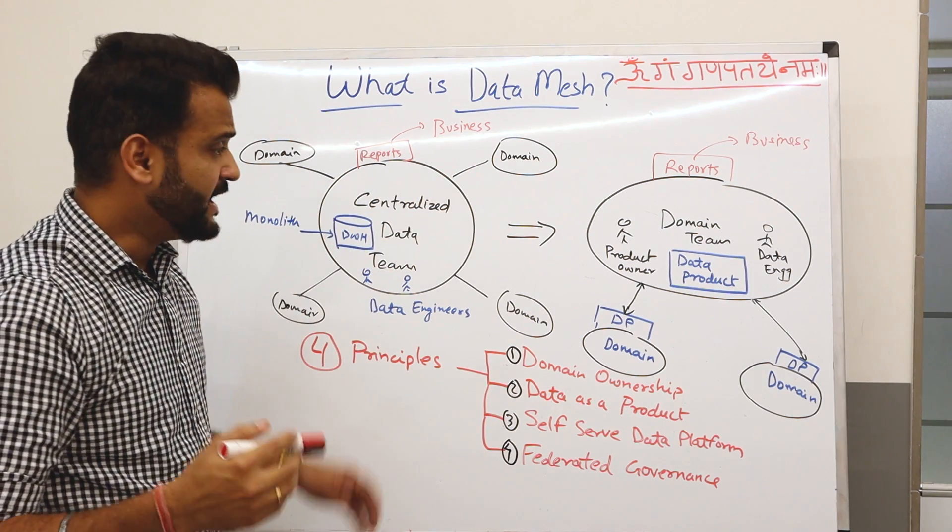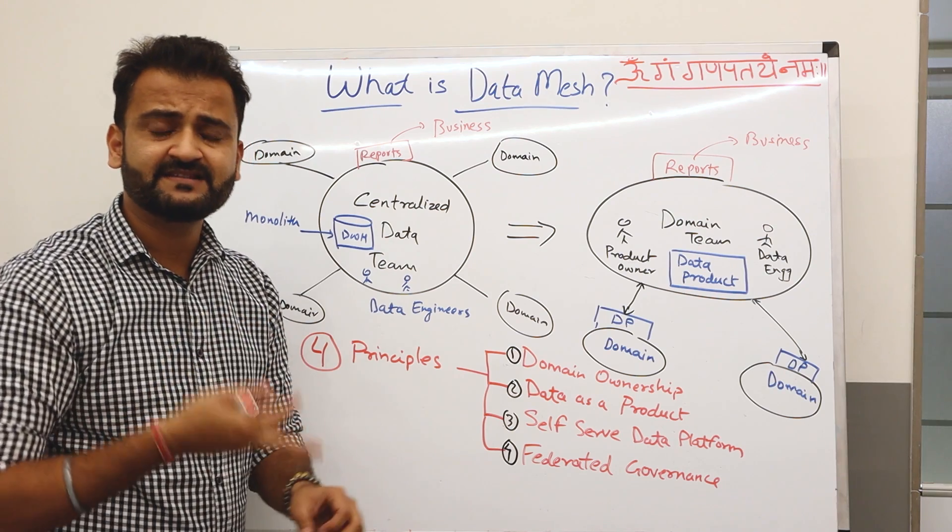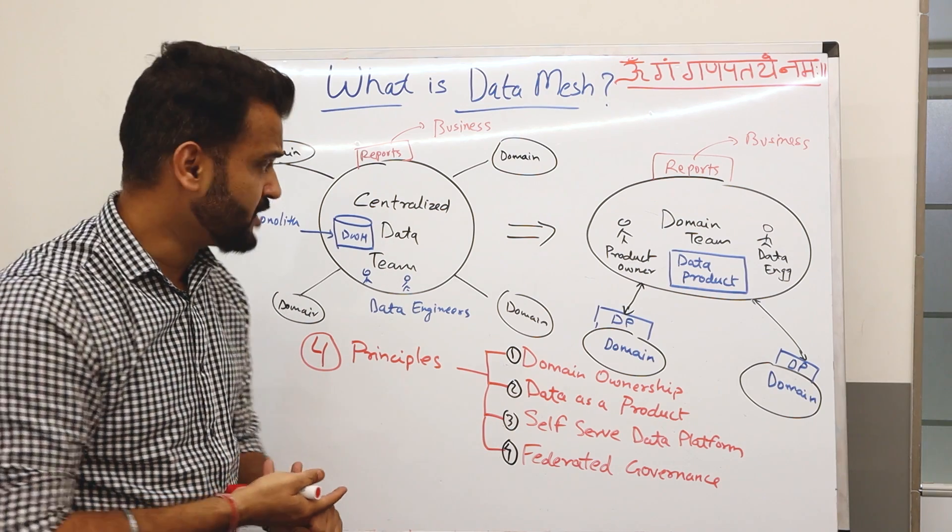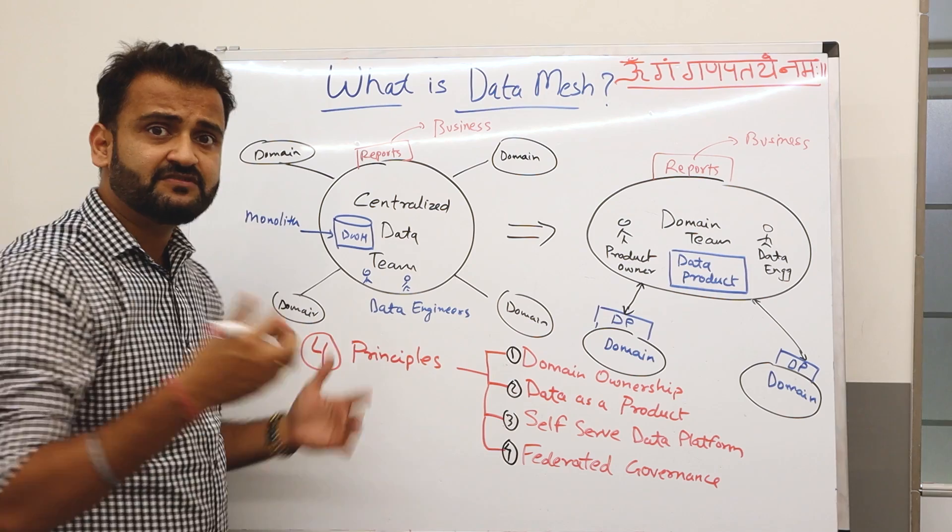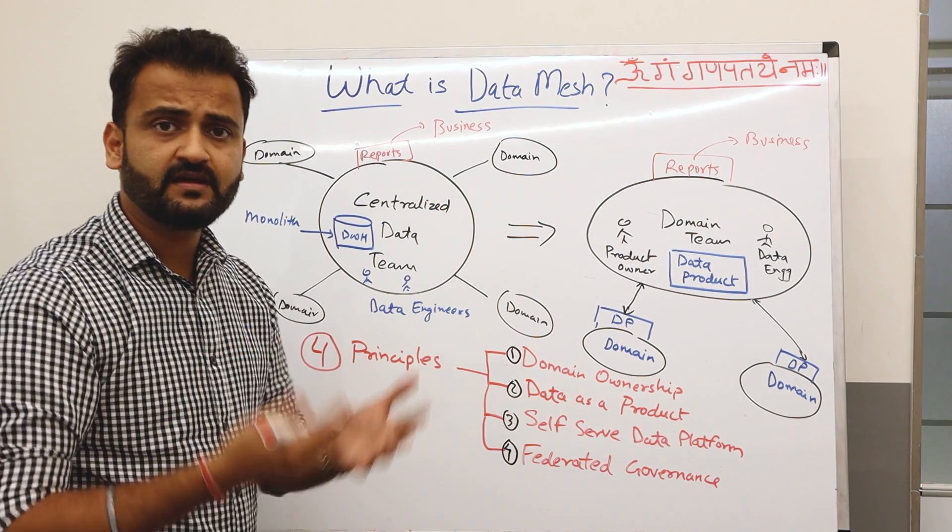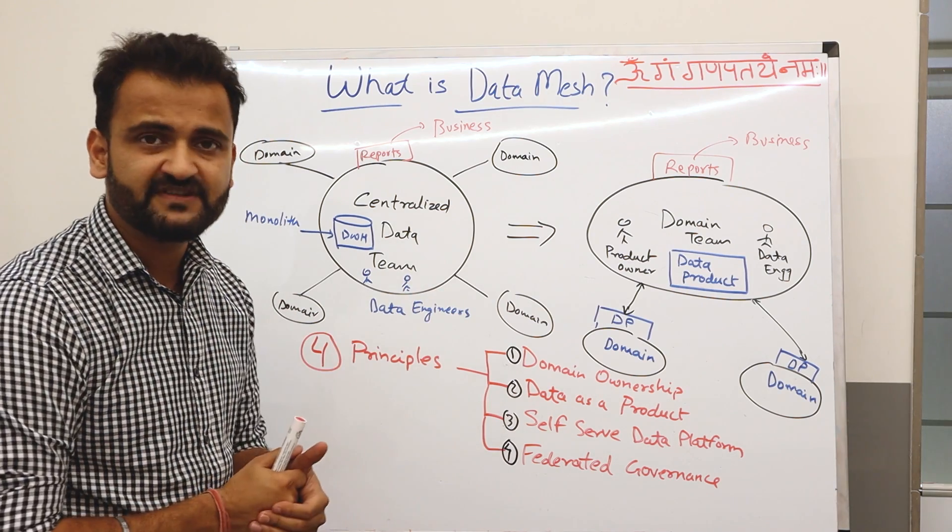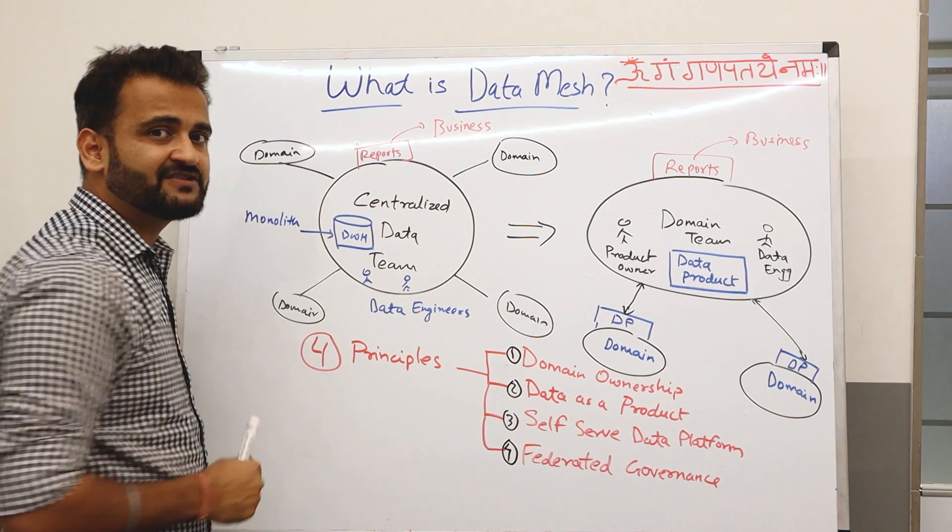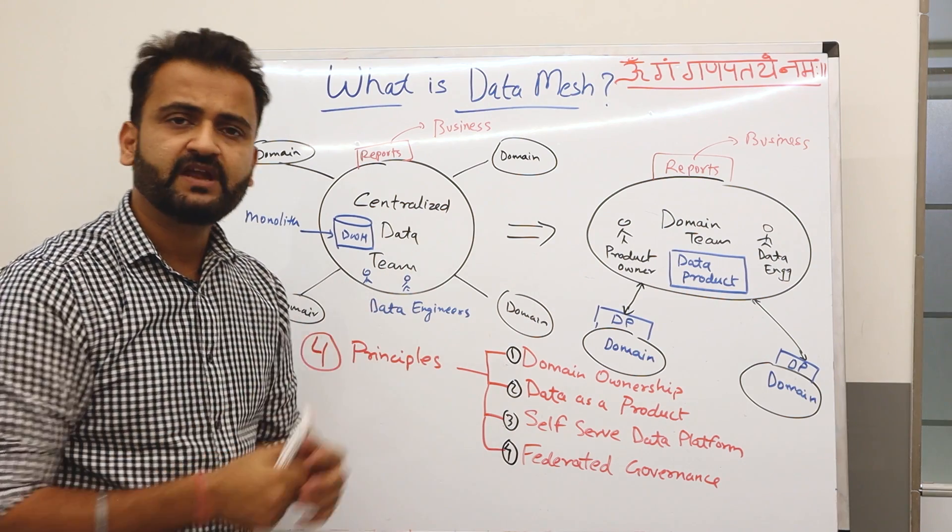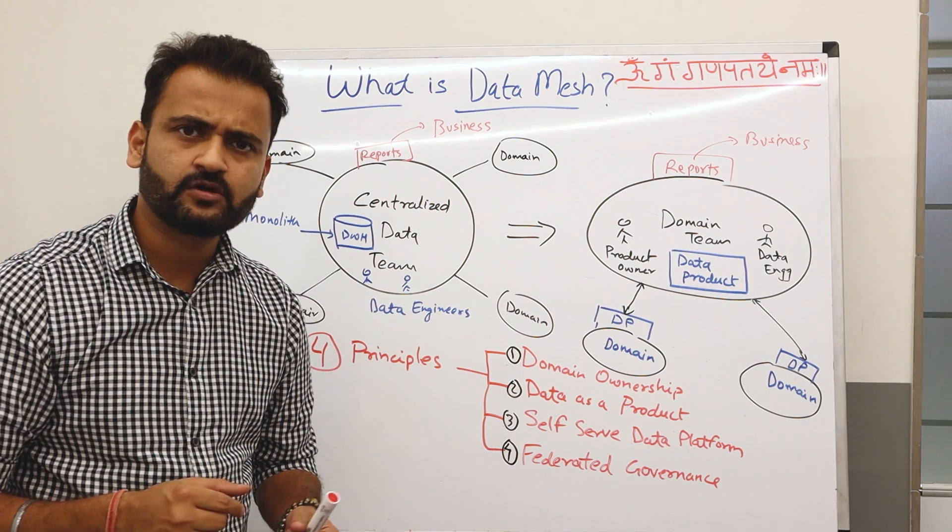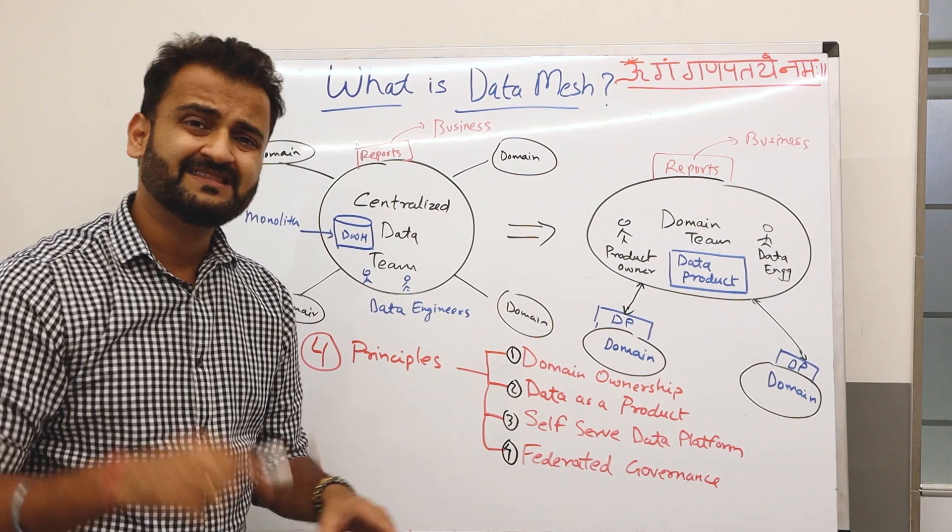And all of a sudden there are delays, there are bottlenecks understanding the requirements because data team is not God that they are not there to understand every aspect of your business. That's what domain has to do.